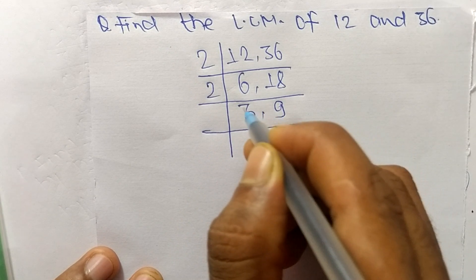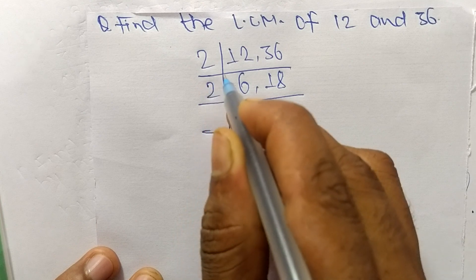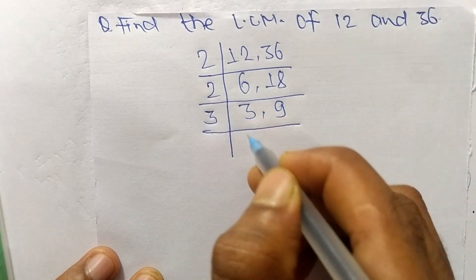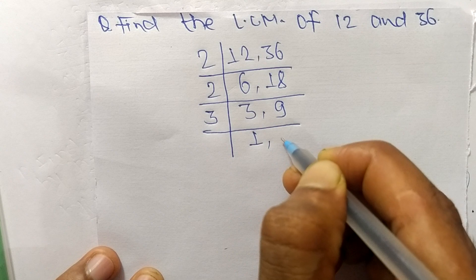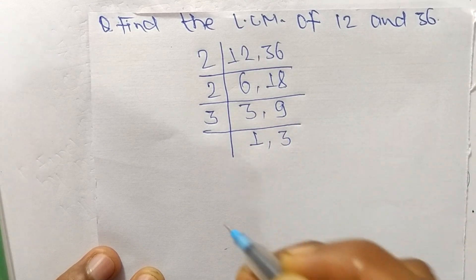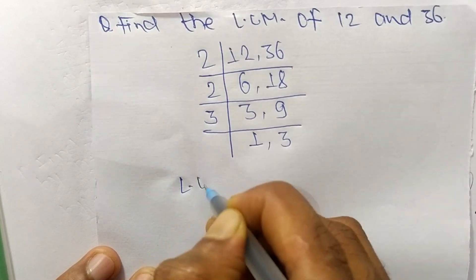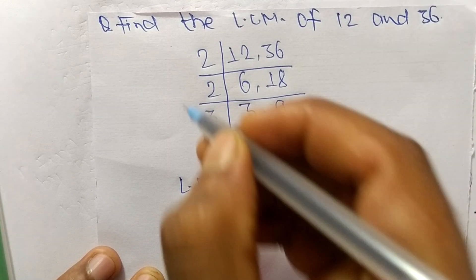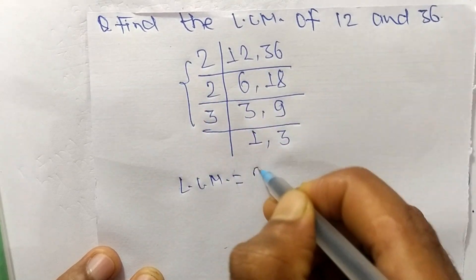So 3 times 1 means 3, and 3 times 3 means it is 9. So its LCM is equal to, from this part it is 2 times 2 times 3, and from this part it is 1 times 3.